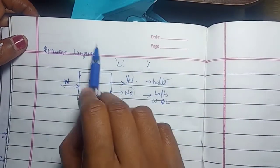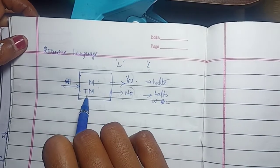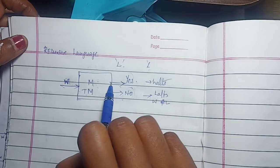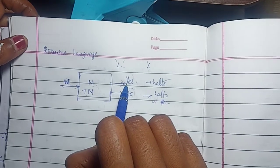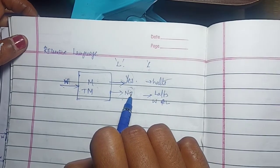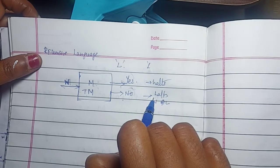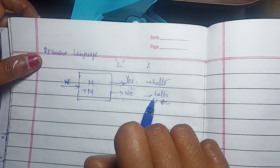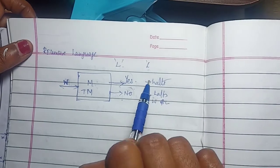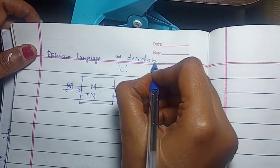This is known as recursive language. Whenever you give an input W to a Turing machine M, if the particular string is available in the language L, it should accept and halt, providing a result of yes. It should reject strings not in the language and halt without entering the accepting state.